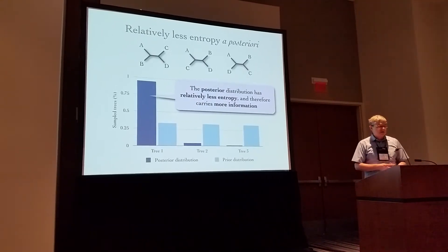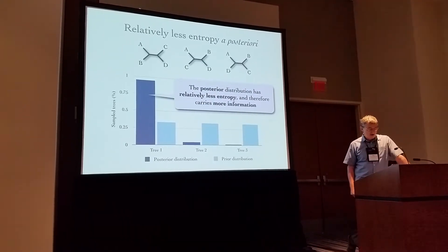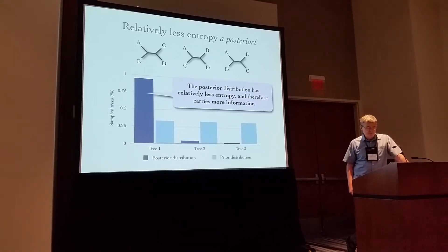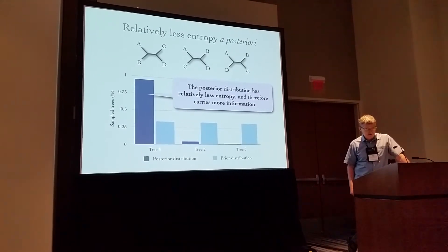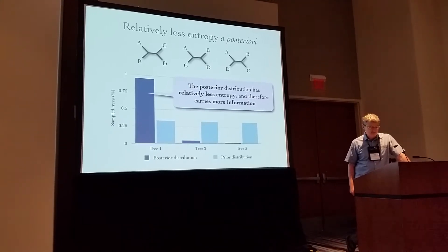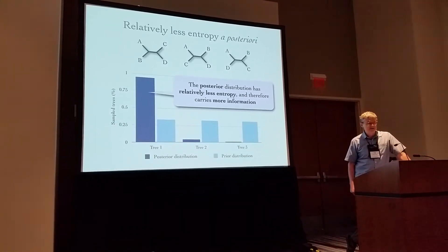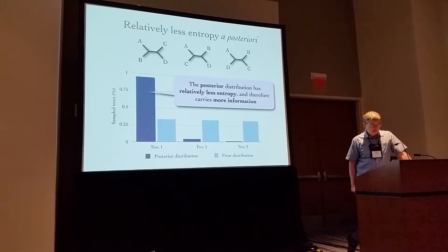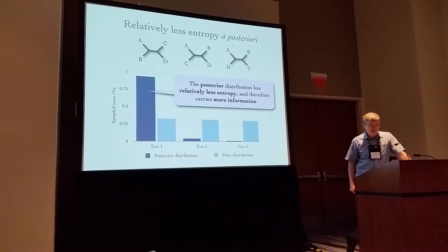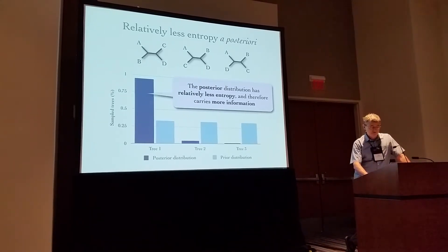Suppose that we carry out a Bayesian phylogenetic analysis using that prior, and the posterior distribution heavily favors tree topology one over the other two tree topologies. The posterior distribution has much less entropy, and thus carries much more information about the tree topology than does the prior. Because the prior was not informative, this information must have come from the data through the likelihood function.